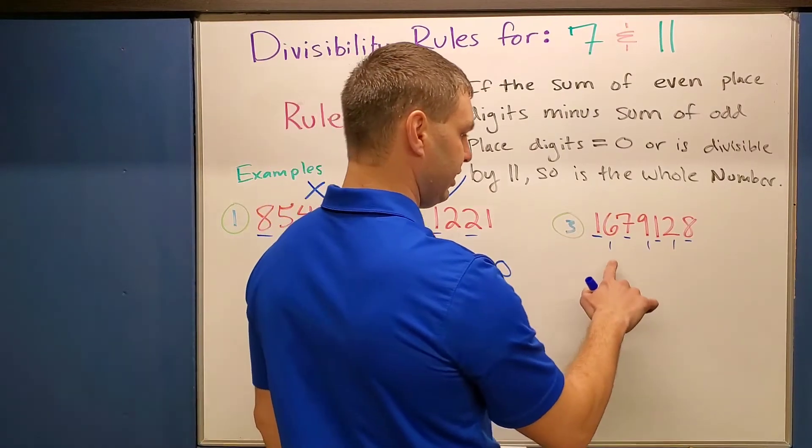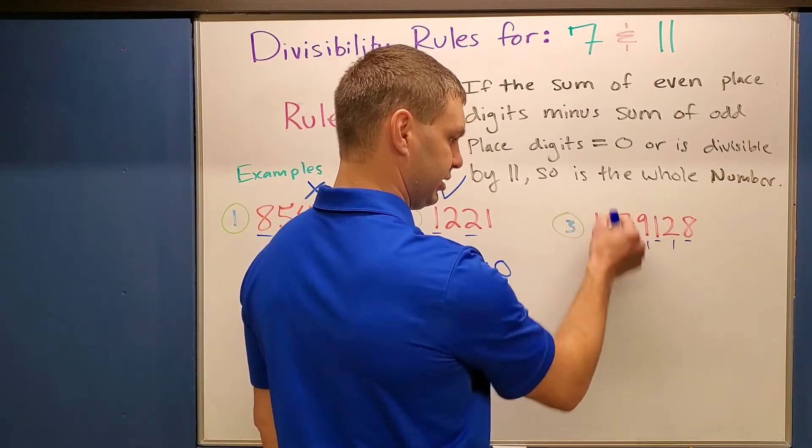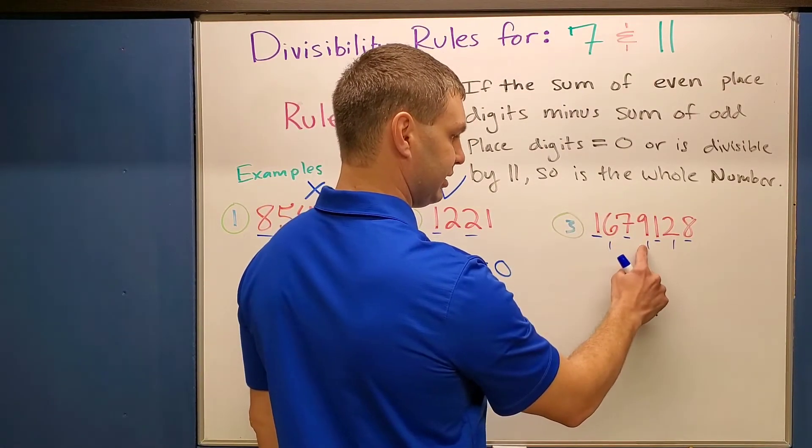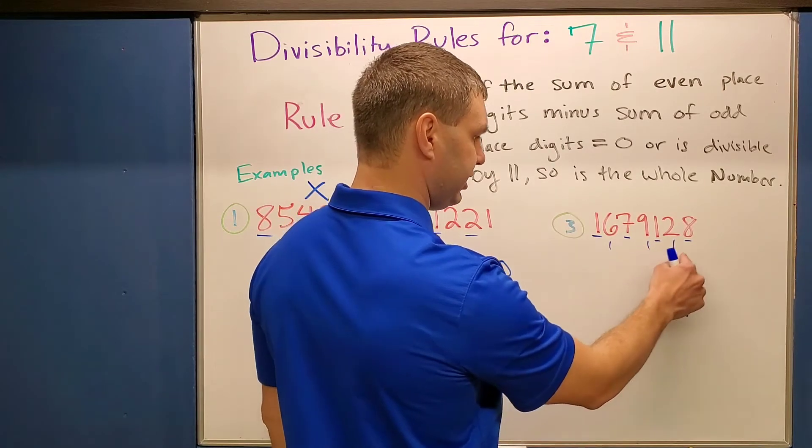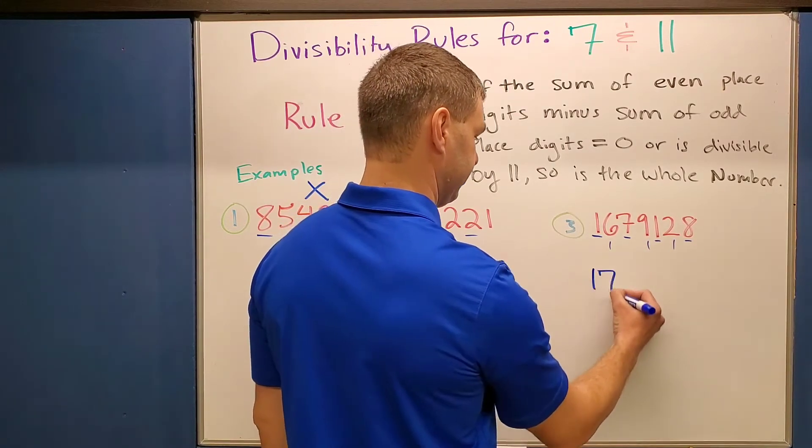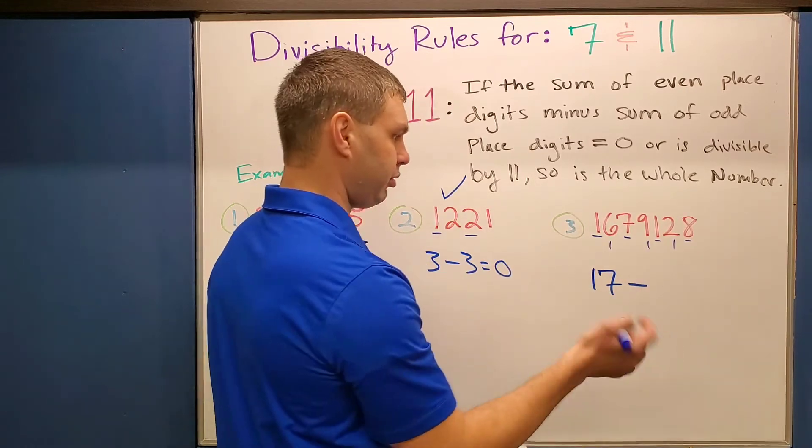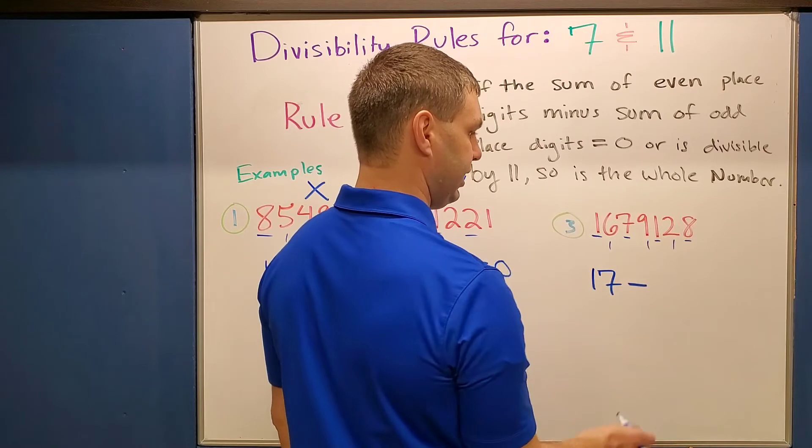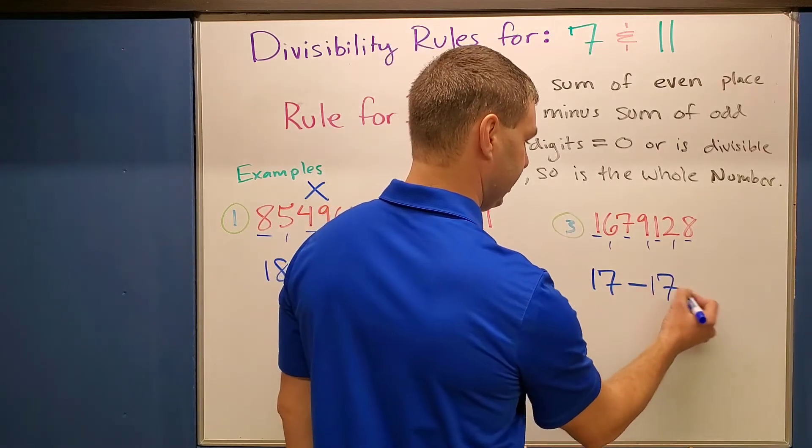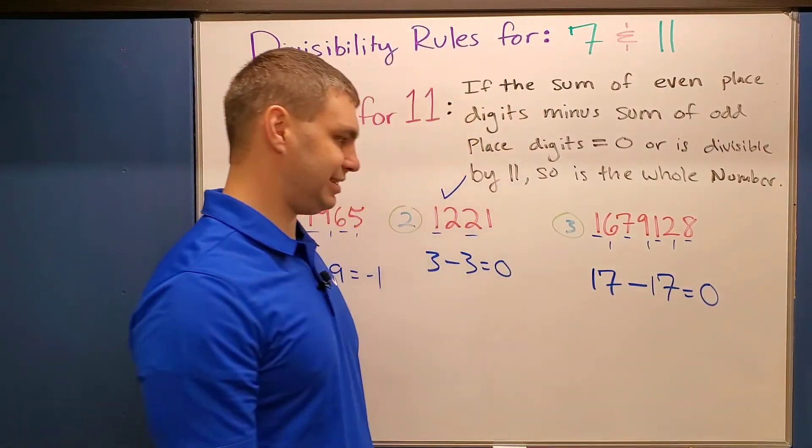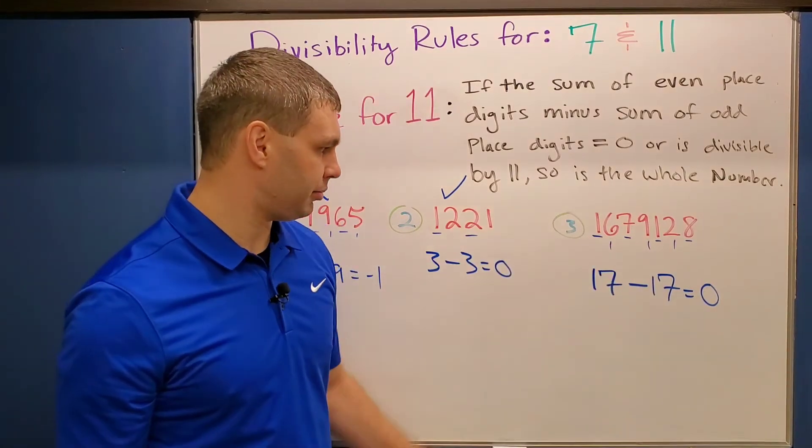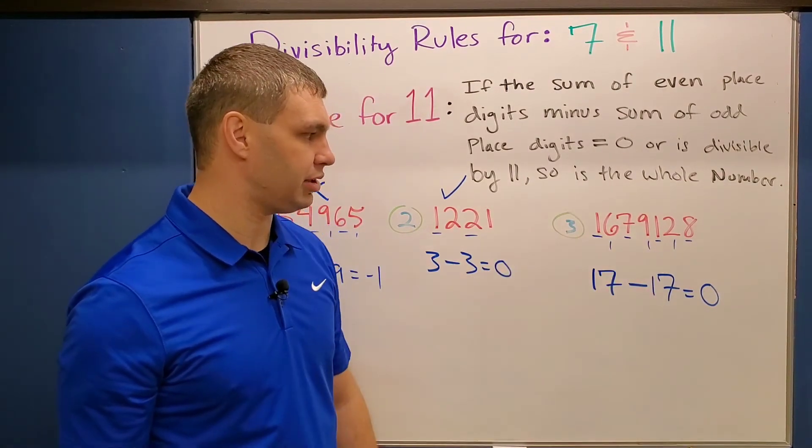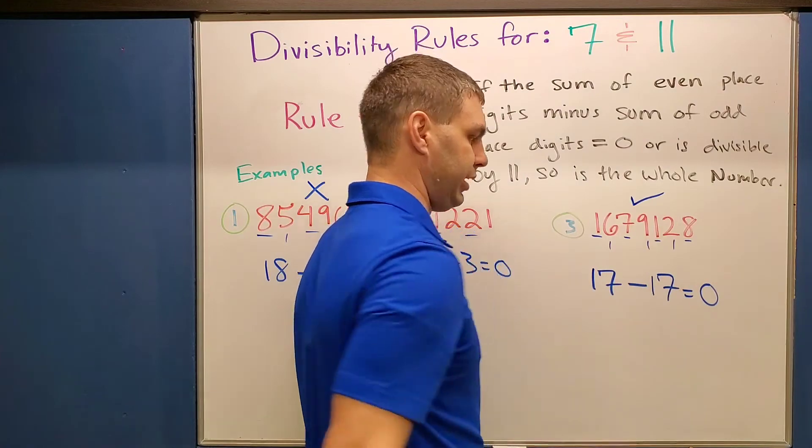So if I add up the evens first, again, that's my ones that are going down. This would be 6 plus 9 is 15. 15 plus 2 is 17. Minus then the odd ones. There's 4 of these. 1 and 7 is 8. 9 and then 9 plus 8 is also 17. So again, since that equals 0, this big long number, 1,679,128 is divisible by 11.